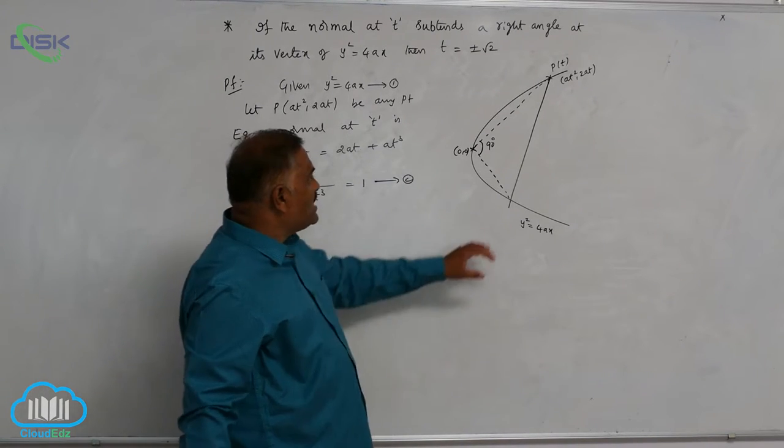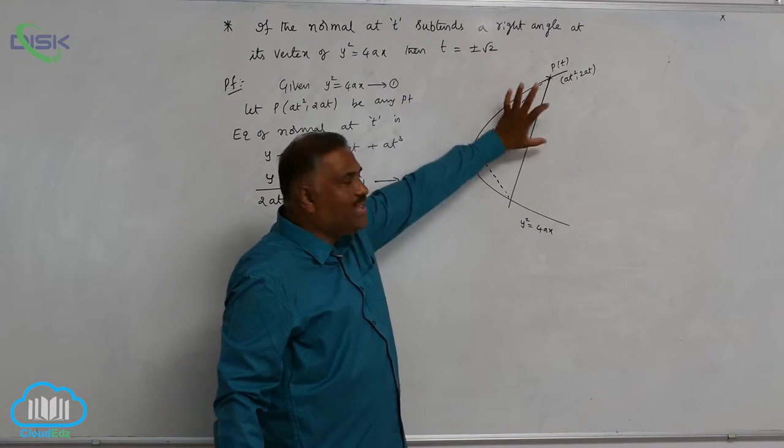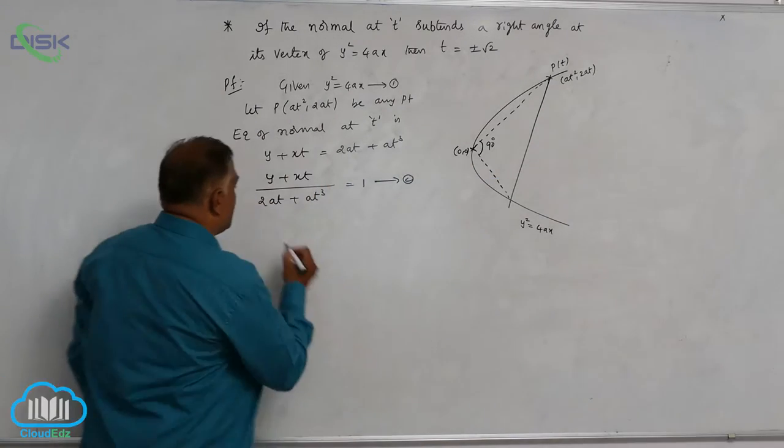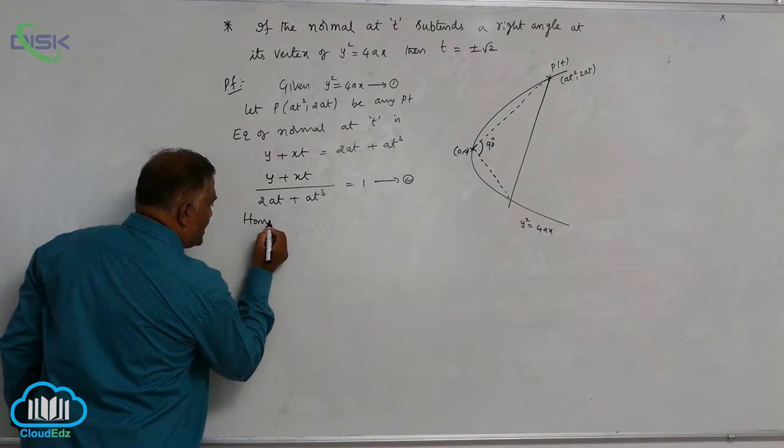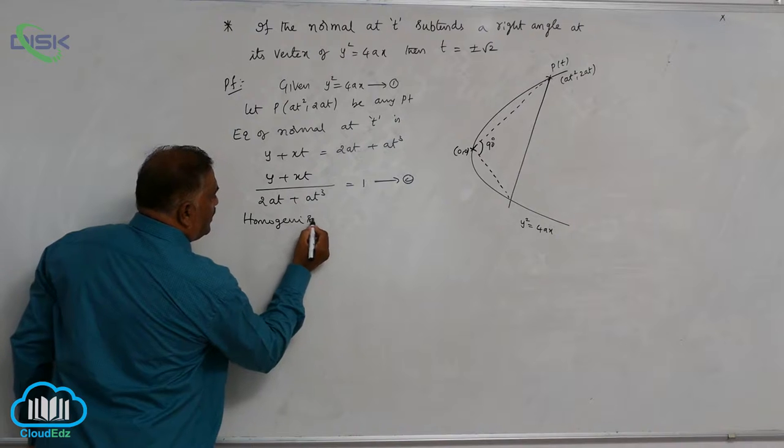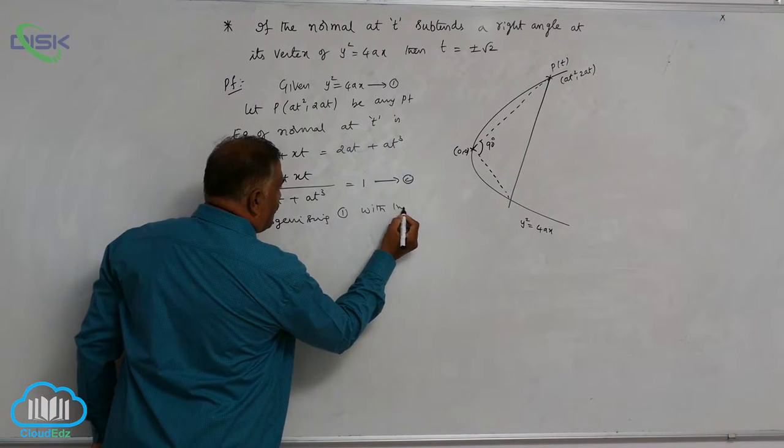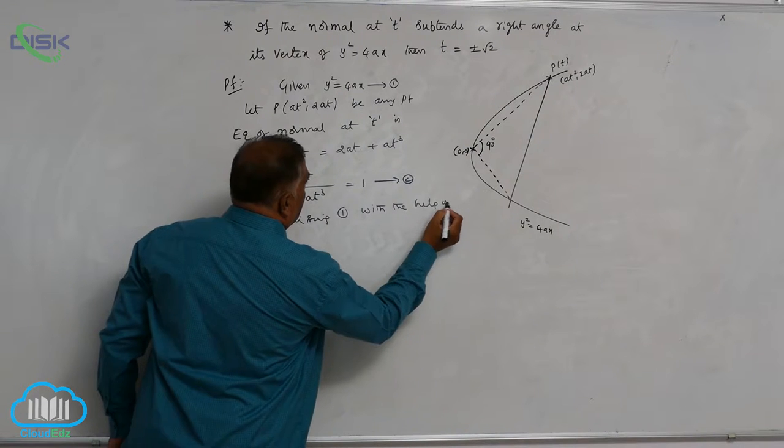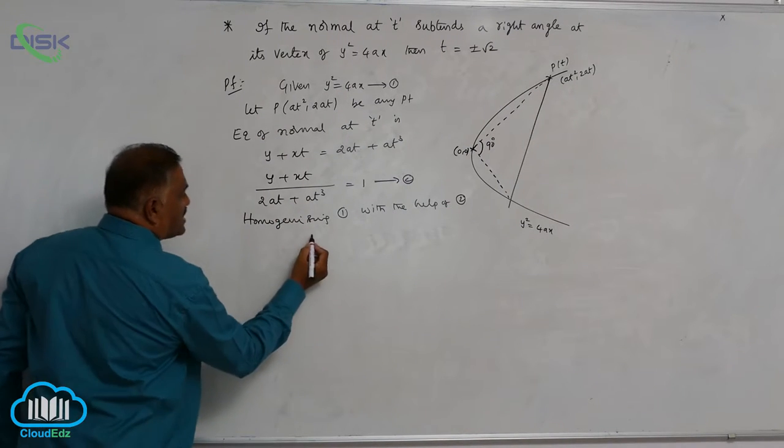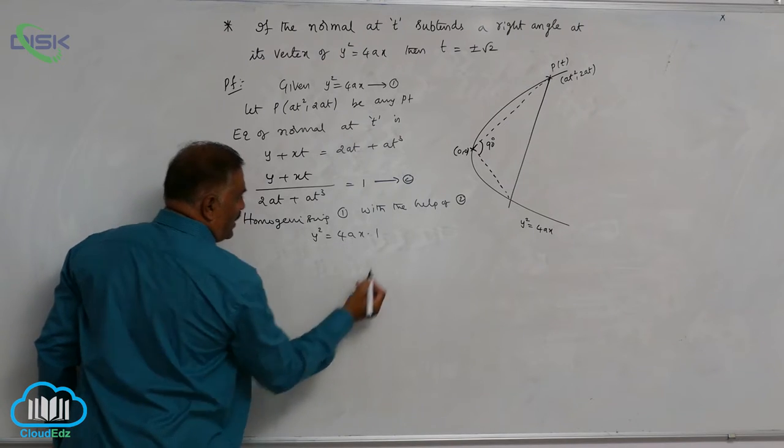Now, homogenizing the parabola with the help of normal. So, homogenizing 1 with the help of 2. What do you get now? y square equal to 4ax into 1.